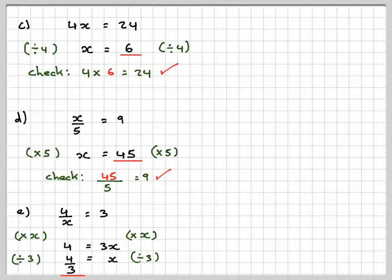Doing the check, a little bit more difficult. 4 divided by 4 over 3, which we write as 4 divided by 4 over 3. When we're dividing by fractions we change that to a multiplication sign and take the reciprocal or invert the fraction. The 4s will cancel out and I get 3, which is what I wanted.